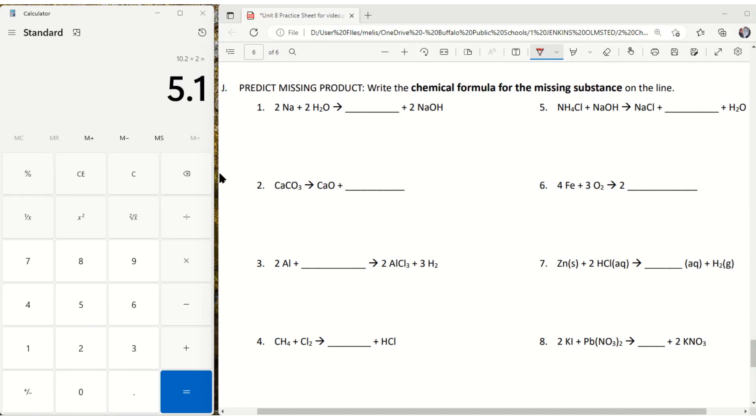Okay, last one on this sheet. Predict the missing product. So write the chemical formula for the missing substance on the line.